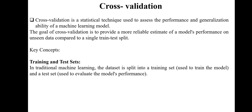What is the topic? Cross-validation. Cross-validation is a statistical technique used to assess the performance and generalization ability of a machine learning model. The goal of cross-validation is to provide a more reliable estimate of a model's performance on unseen data, compared to a single train-test split.